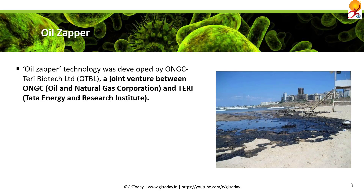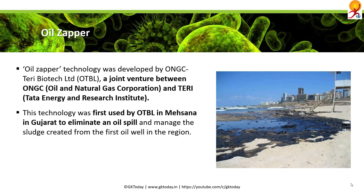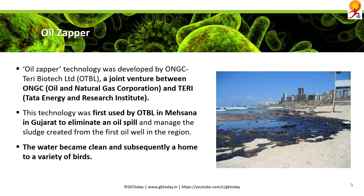Oil Zapper technology was first developed by ONGC-TERI Biotech Limited (OTBL), a joint venture between ONGC (Oil and Natural Gas Corporation) and TERI (Tata Energy and Research Institute). This technology was first used by OTBL in Mehsana, Gujarat, to eliminate an oil spill and manage sludge created from the first oil well in the region. The water became clean and subsequently became home to a variety of birds.